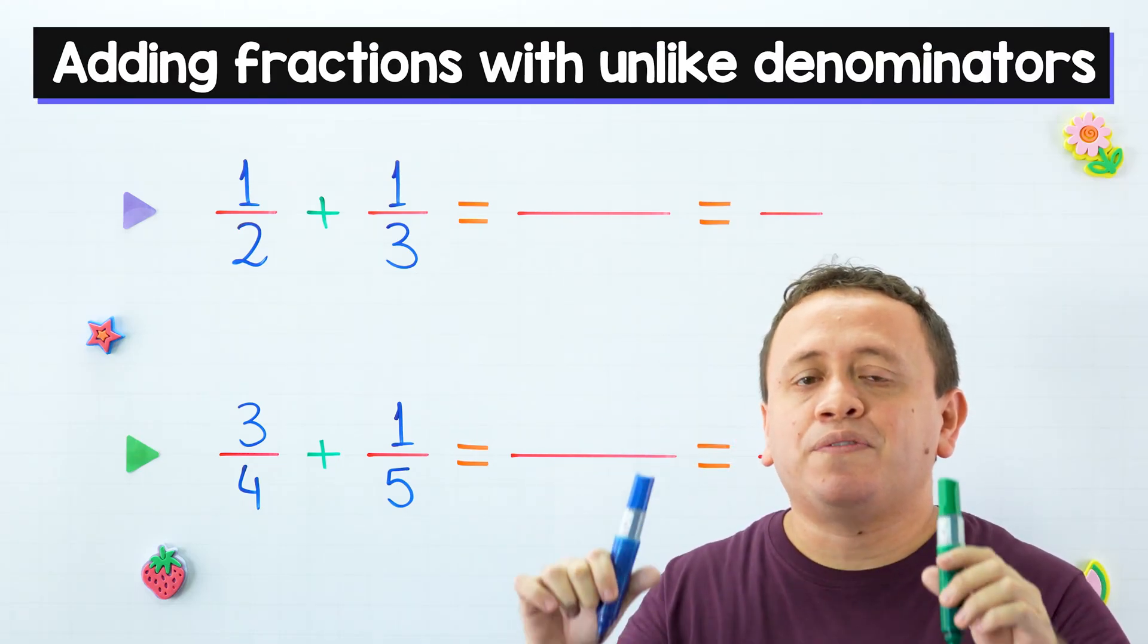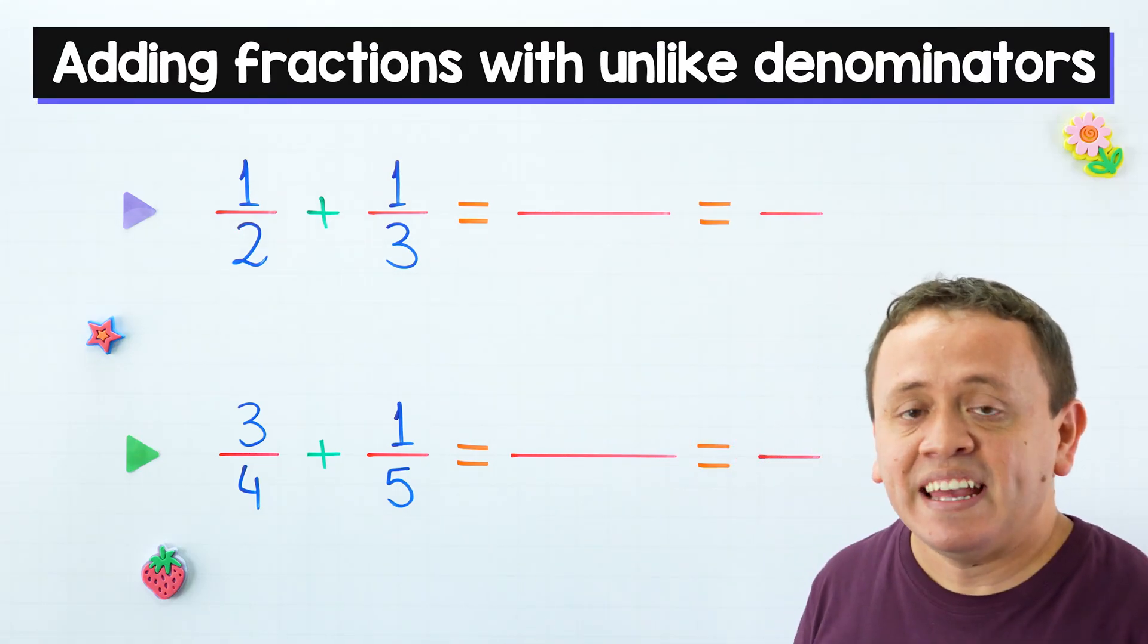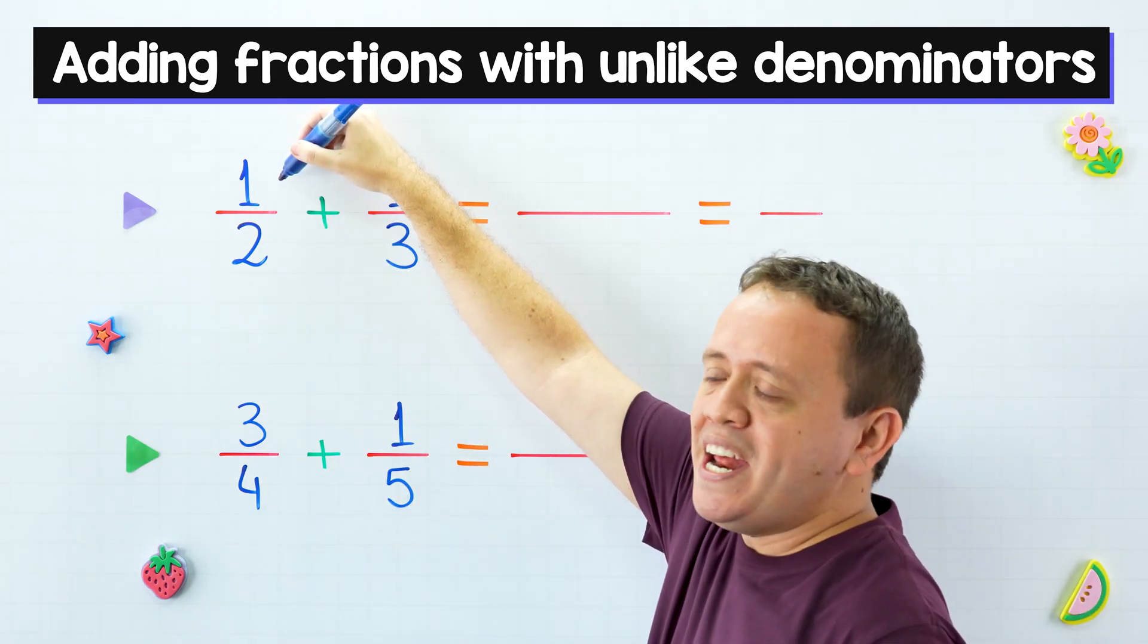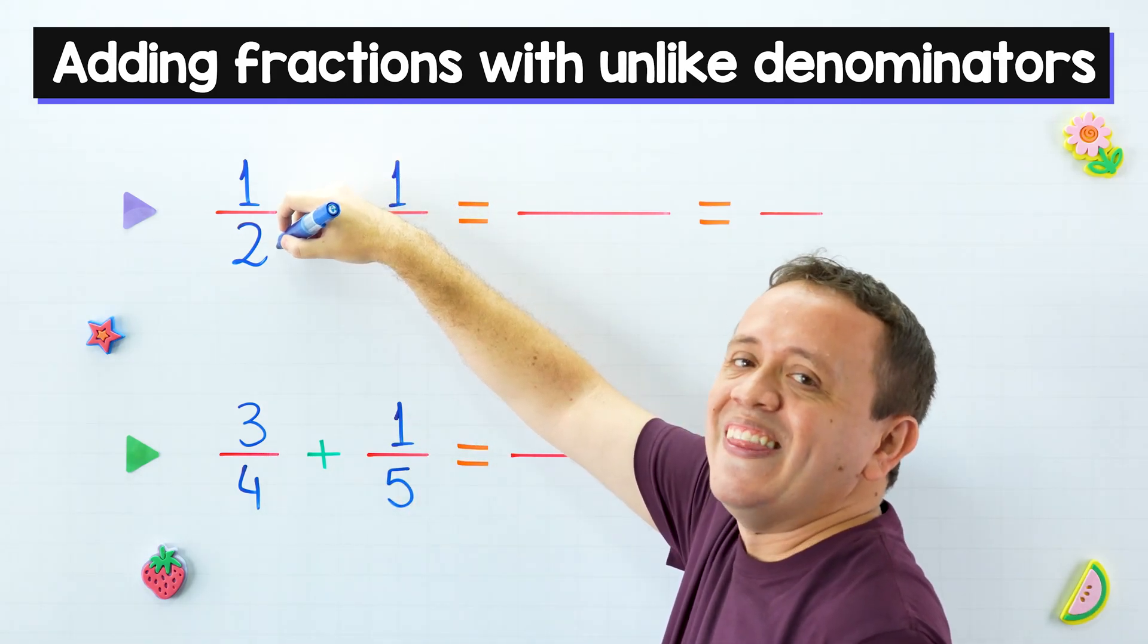Hi, today I'm going to show you how to add fractions with unlike denominators. Never forget that in a fraction, the top number is called the numerator and the bottom number is called the denominator.